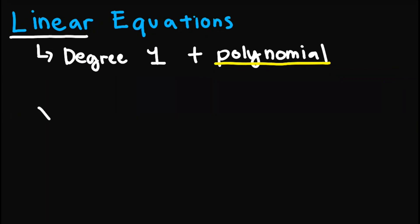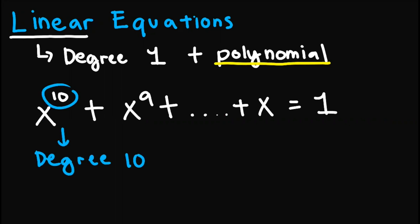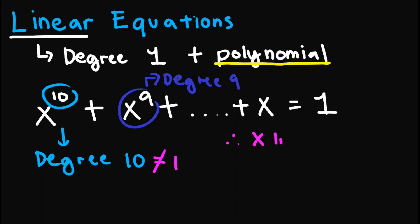What if we have x raised to 10 plus x raised to 9 up until x equals 1? Well, the degree of this term is 10, and the degree of this next term is 9. Since we can determine that the degree of the whole polynomial is determined by the degree of its highest term, which is clearly degree 10, and since this is not equal to 1, therefore this equation is not a linear equation.